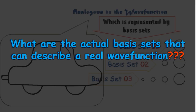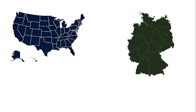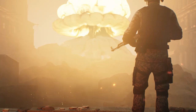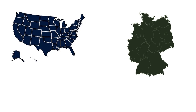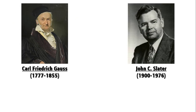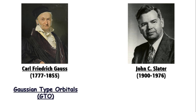To describe the wave function, we may start with two different countries — United States and Germany. Here we are with two astounding scientists from two different countries and two different timelines: Carl Friedrich Gauss and John Clarke Slater. More precisely, what we are going to talk about here are the orbitals resulting from their equations, commonly known as Gaussian Type Orbitals or GTO, and Slater Type Orbitals or STO.